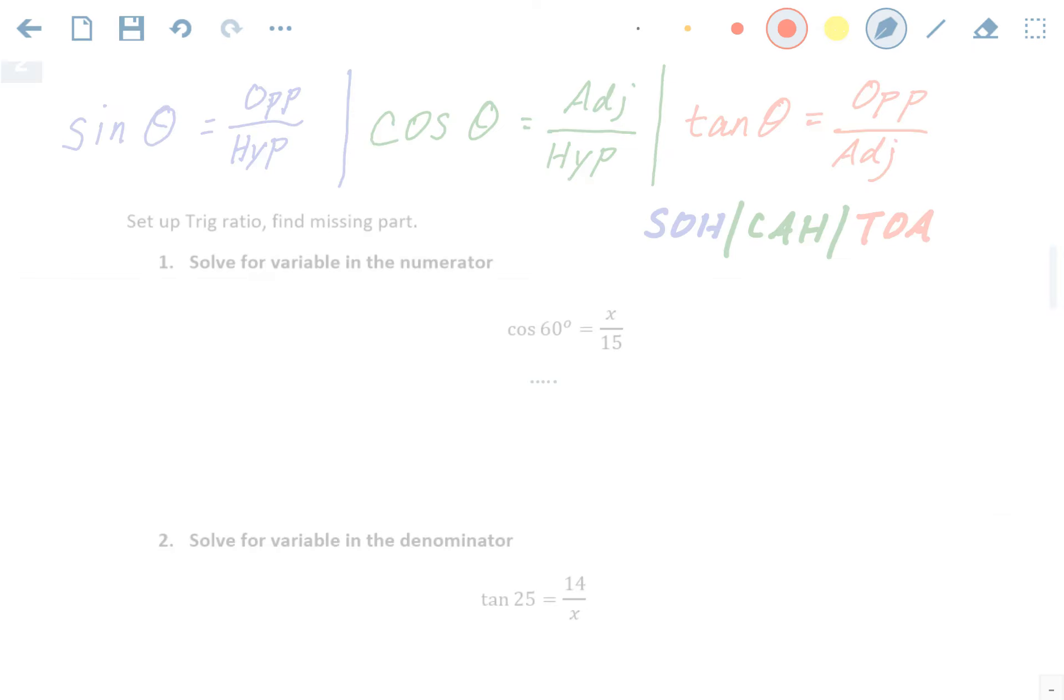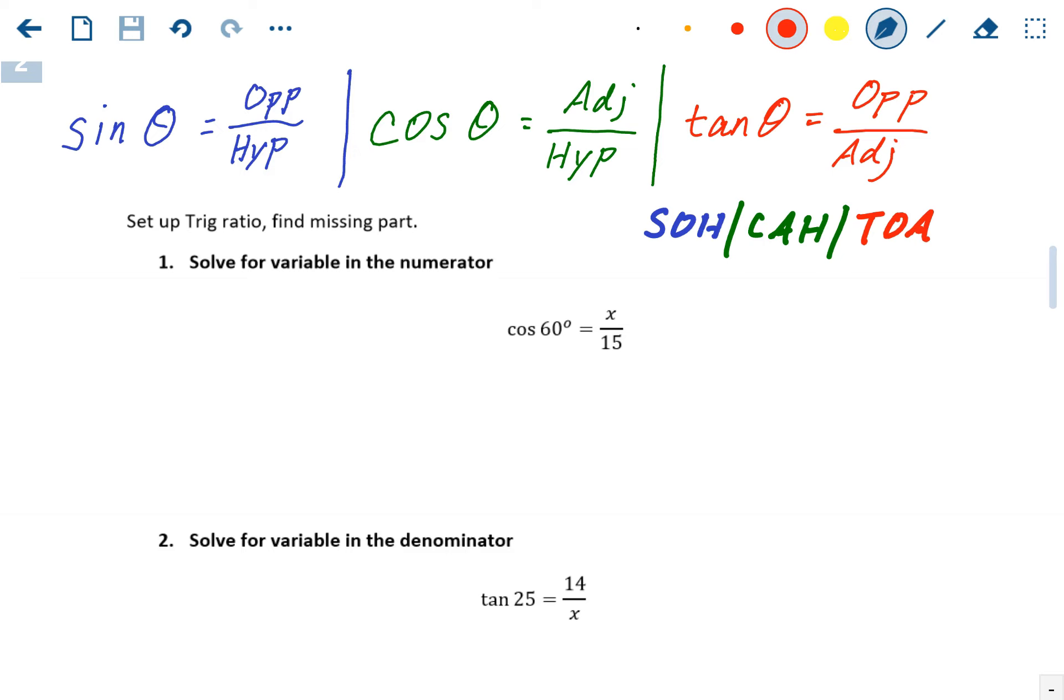So there's three scenarios here. You'd be missing the top part of your ratio, you'd be missing the bottom part of your ratio, or you could be missing the angle. So we're going to run through one of each of those.